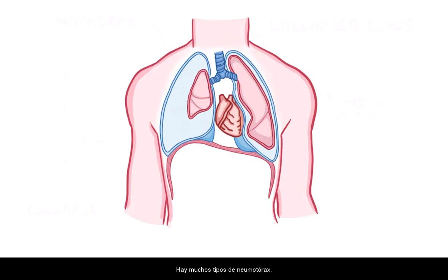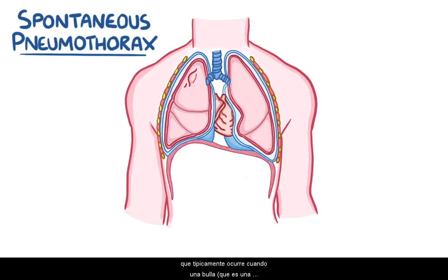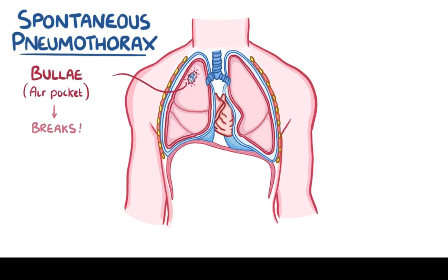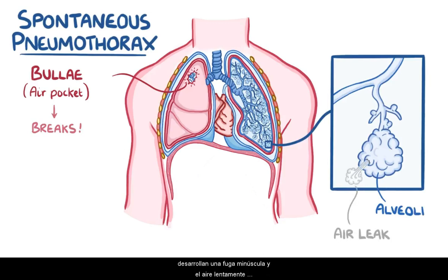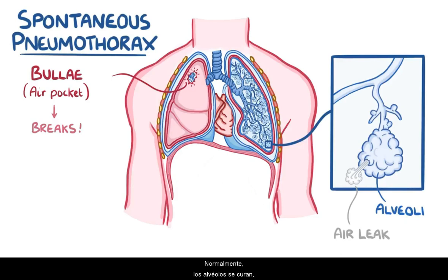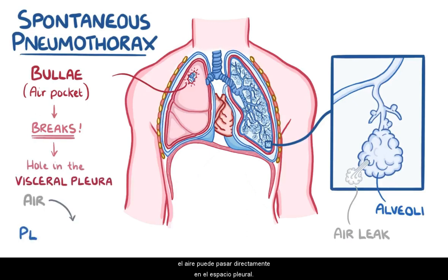There are many types of pneumothorax. The first is spontaneous pneumothorax, which typically occurs when a bulle — a large air pocket — forms on the surface of the lung and breaks. Bullae form when the alveoli, which are the terminal ends of the lungs where gas exchange occurs, develop a tiny leak and air slowly seeps into the surrounding lung tissue. Typically the alveoli heal up, but the result is a bulle. And if the bulle breaks, it creates a large hole in the visceral pleura, and air can go from the airway directly into the pleural space.